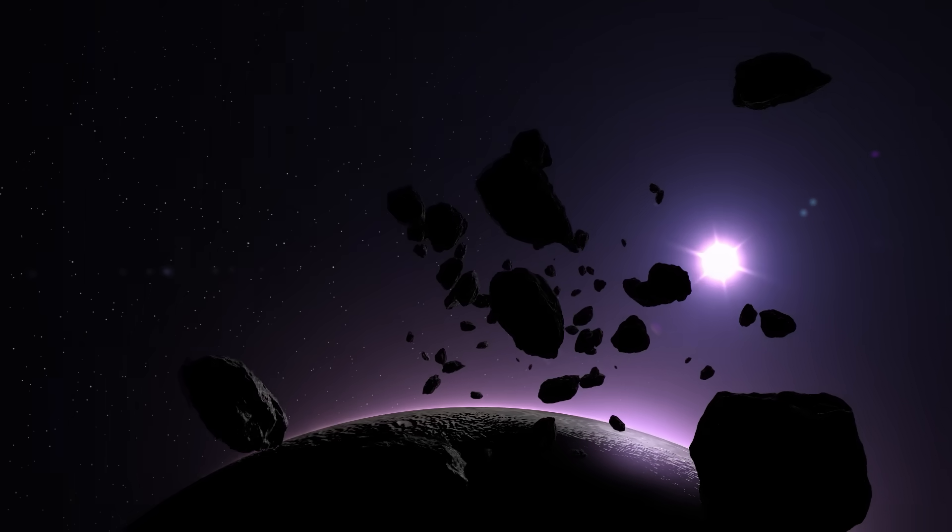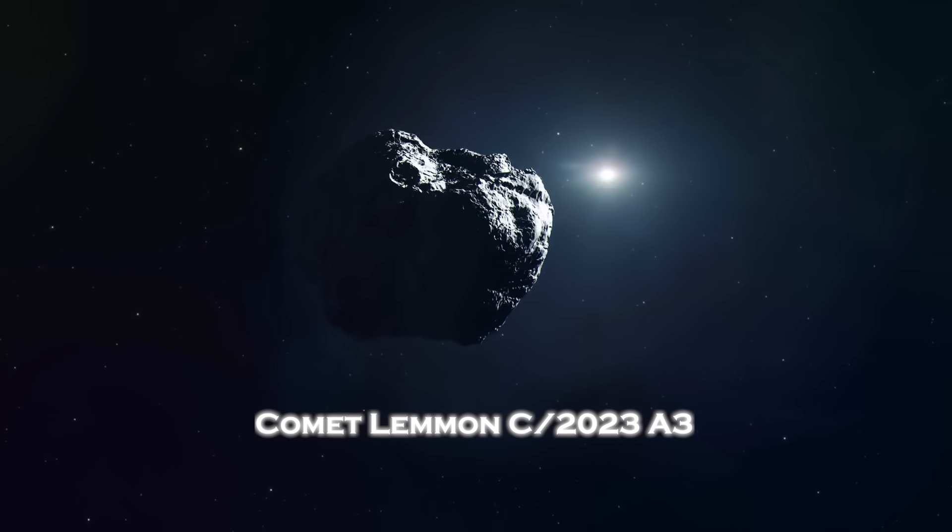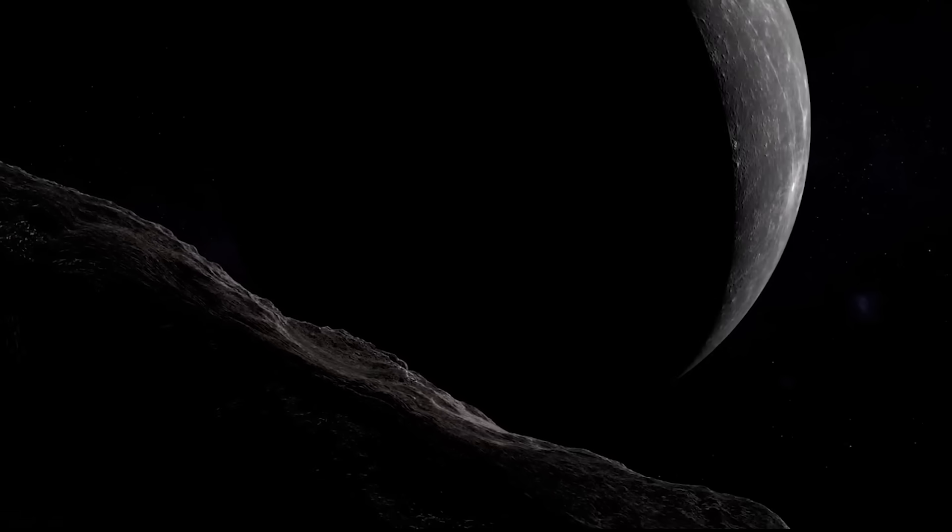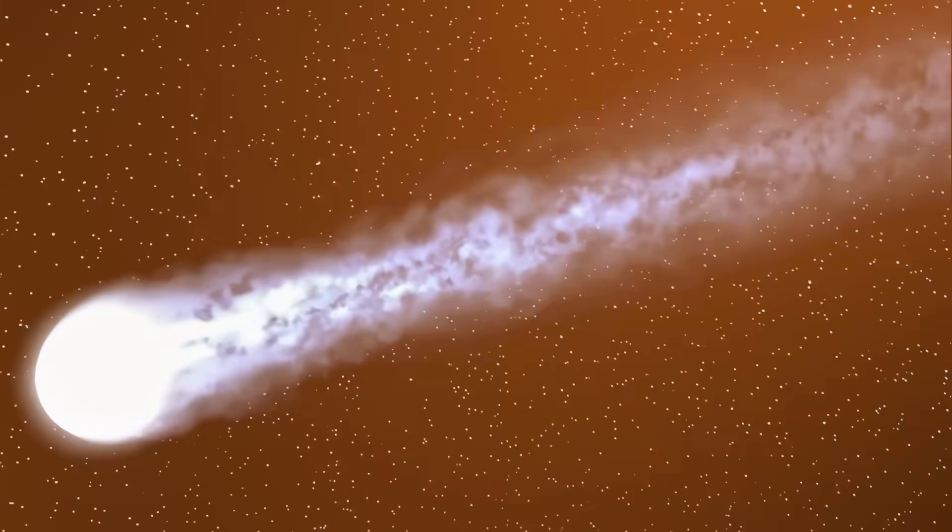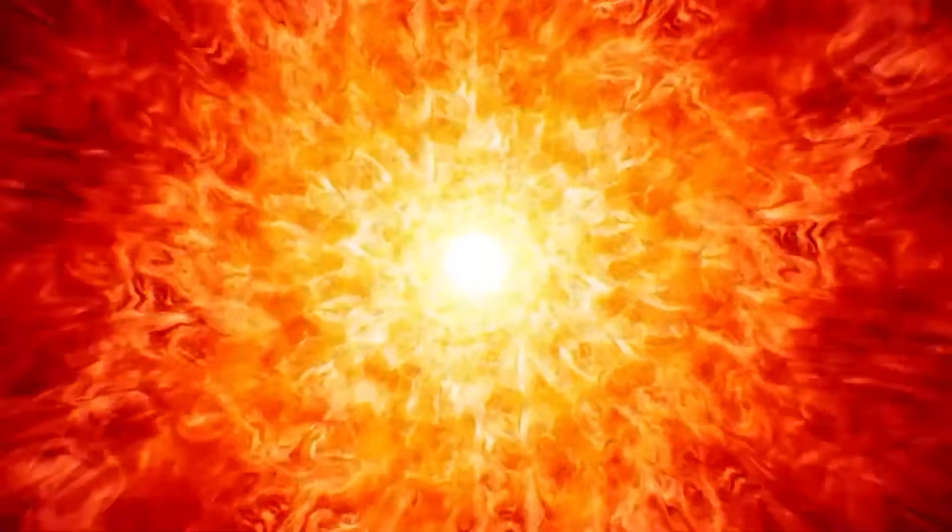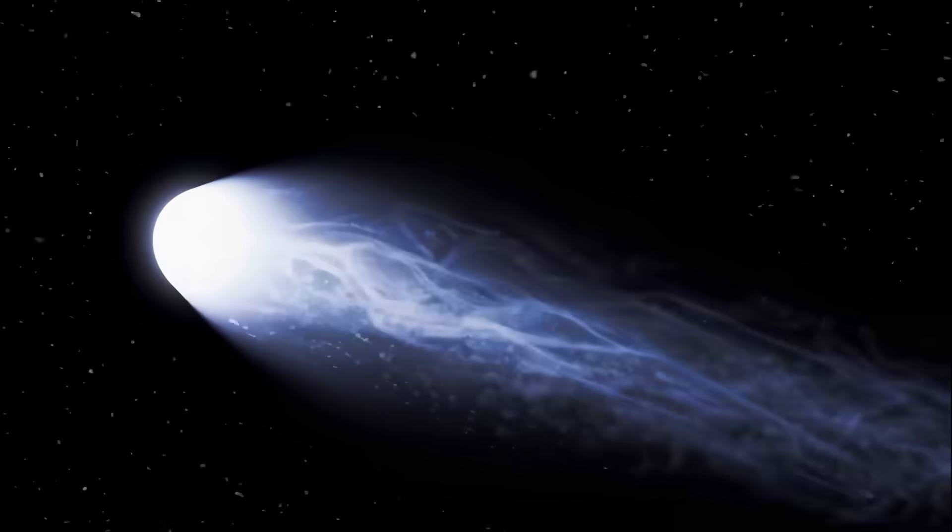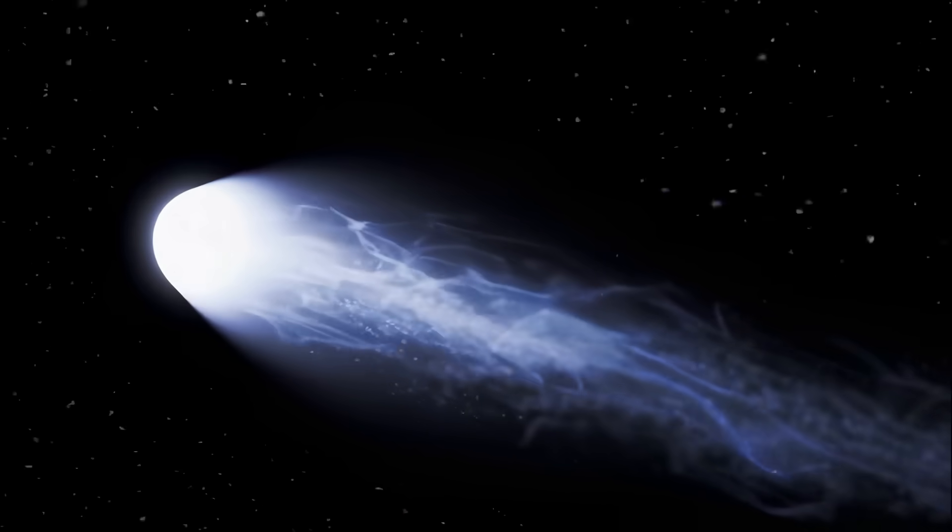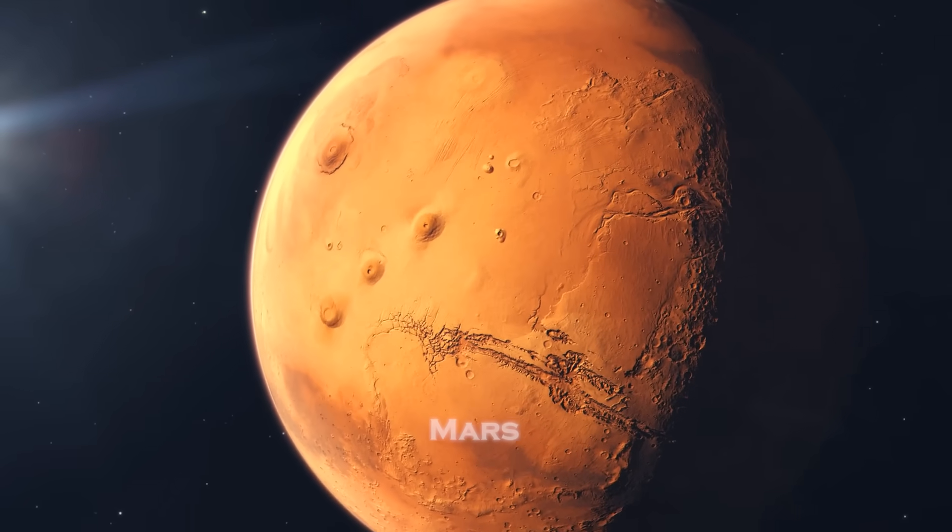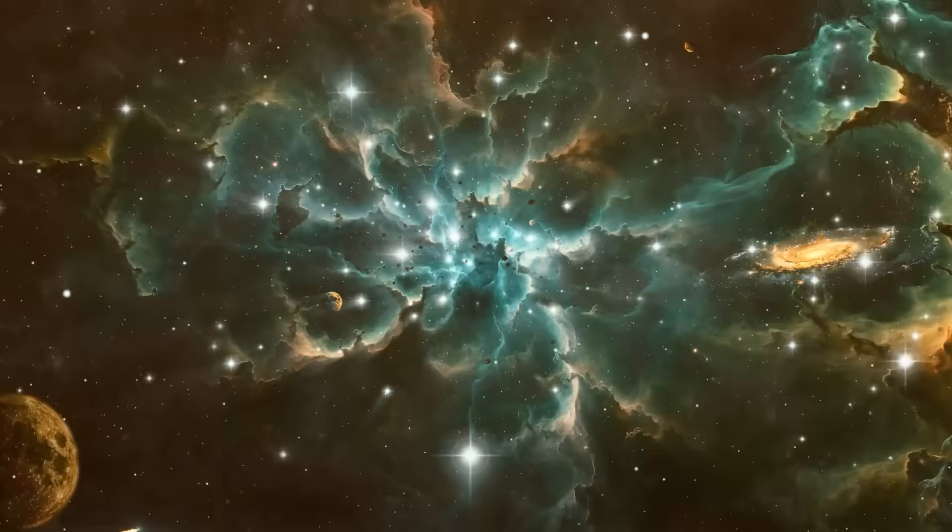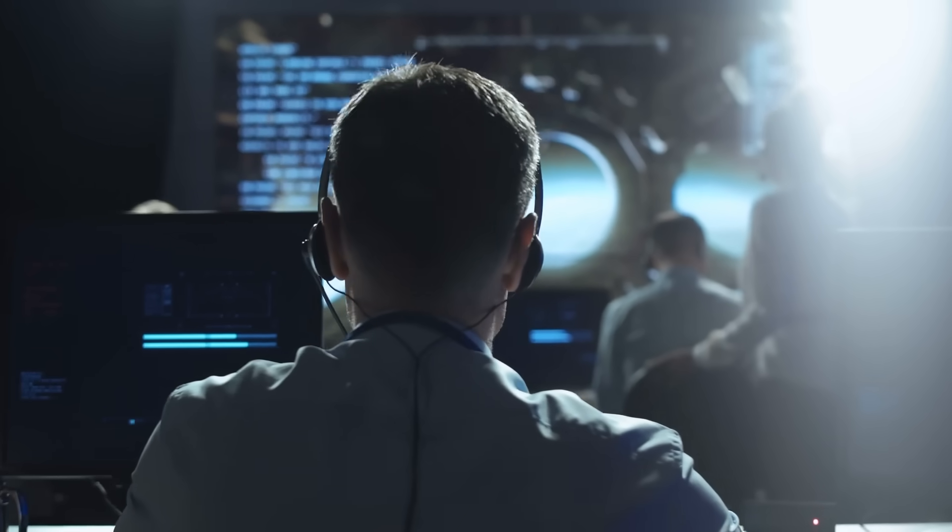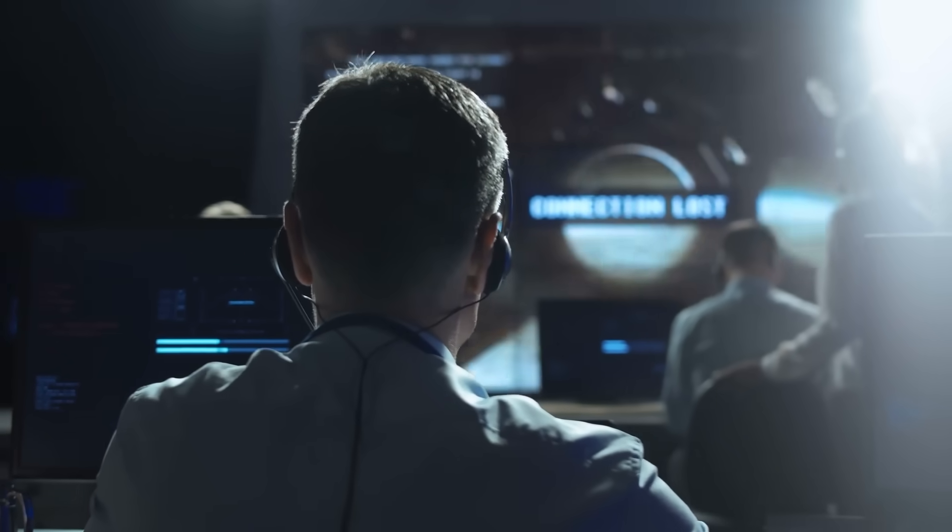Two days later, a second object appeared. Comet Lemon C2023 A3, an old traveler once thought lost to the darkness. But this time, it wasn't fading. It was reigniting. Its coma expanded far beyond any prediction, forming a tail nearly 100 million kilometers long, large enough to stretch halfway to Mars. The images were breathtaking. A glowing arc slicing across Virgo, visible to the naked eye. But for researchers, the awe quickly turned to alarm.